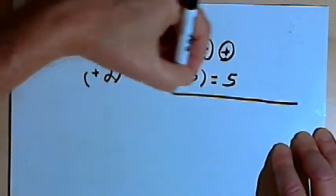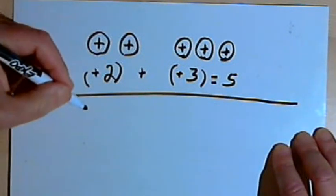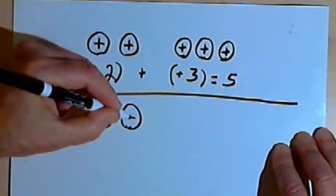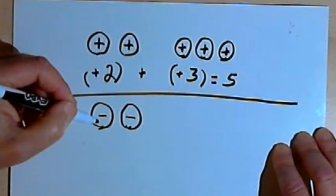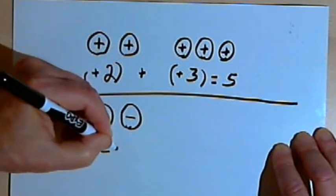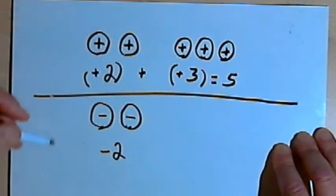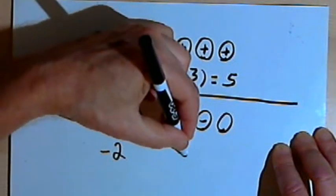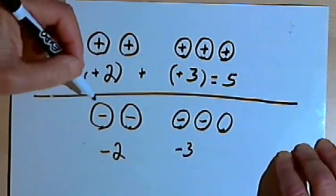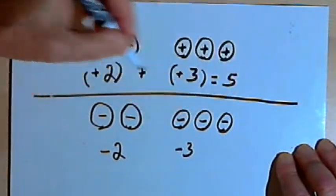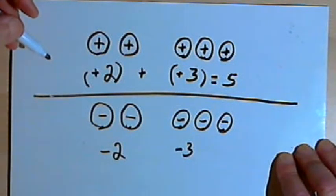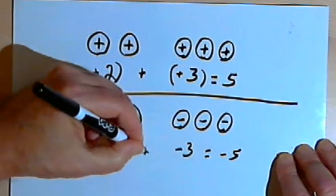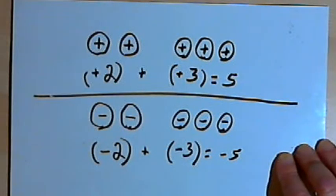Now let's see what happens if you play the game again and you're not as lucky. Let's say that in the first round you didn't get positive chips — you got negative chips. Each negative chip means you've lost a point. So if you get two negative chips, you started out at zero, and now you're at negative 2. And maybe in the second round you got three more negative chips. If we want to know where you are at the end of this game, we can count the chips — they're all the same, they're all negative. You've got five chips, and since they're all negative, that means you've got negative 5. So negative 2 plus negative 3 equals negative 5.